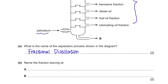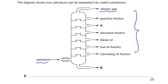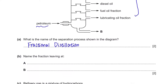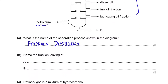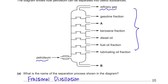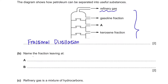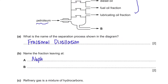Part B asks for the name of the fraction at positions A and B. We just need to keep the order in our minds. A is between gasoline and kerosene, so the answer is naphtha. And for B, it's the last one at the bottom, and it's bitumen.